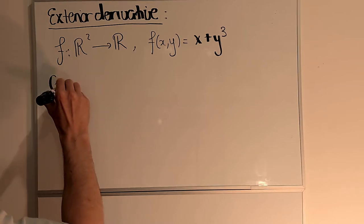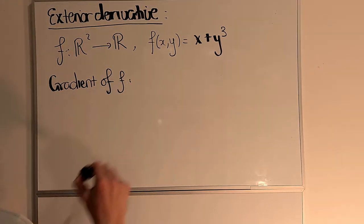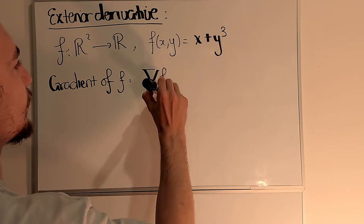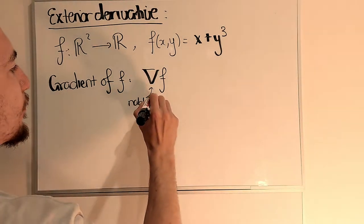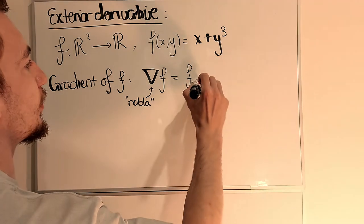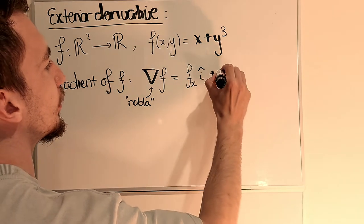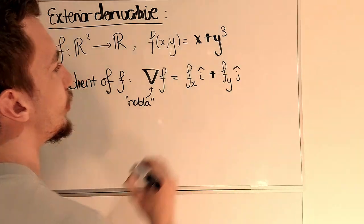the gradient of f, which is the vector field, which I denote by ∇f, and that's given by taking the x partial derivative in the i direction plus the y partial derivative in the j direction.